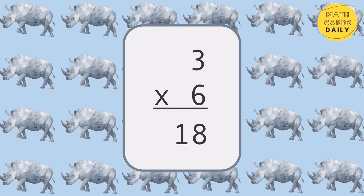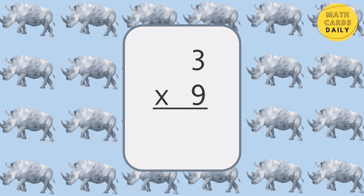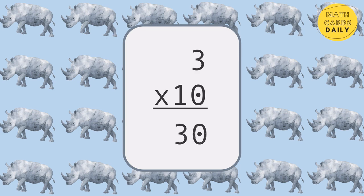3 times 6 is equal to 18. 3 times 7 is equal to 21. 3 times 8 is equal to 24. 3 times 9 is equal to 27. 3 times 10 is equal to 30.